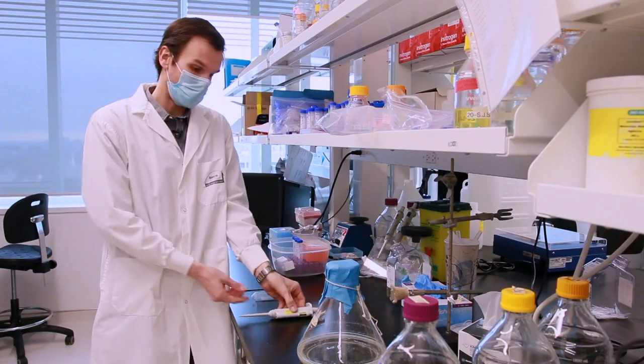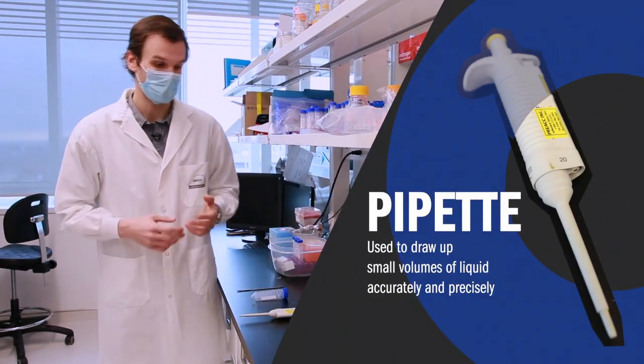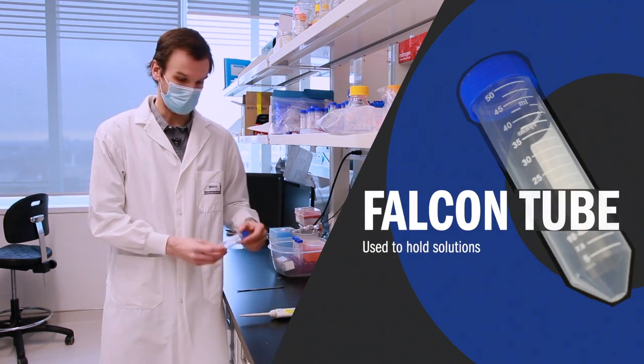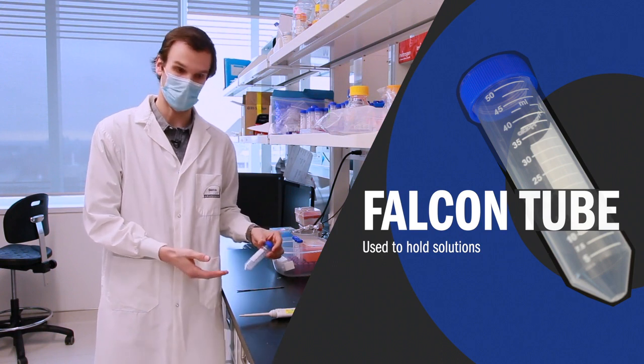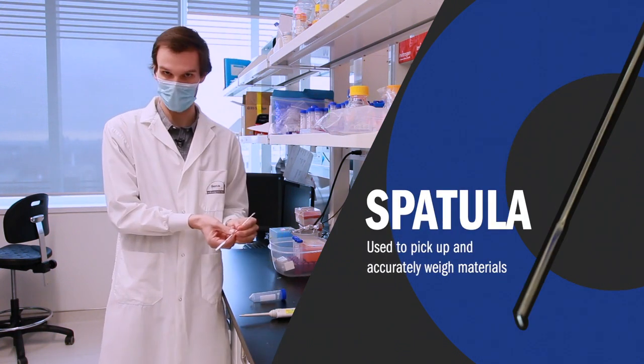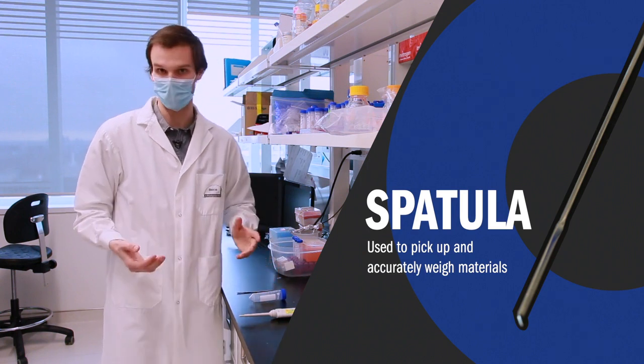Alright, so here we have a pipette, and it allows me to pipette accurately and precisely small volumes of liquid. Here we have a falcon tube. We put solutions inside of it. If you want a test tube, go find chemistry. Last but not least, we have the spatula. This is what I use to weigh out dry chemicals, salts, or even protein.